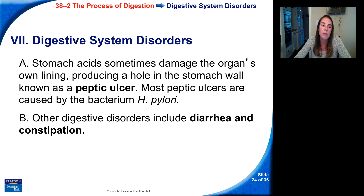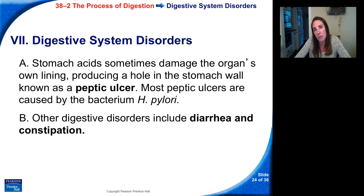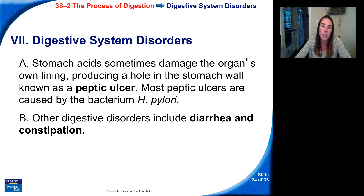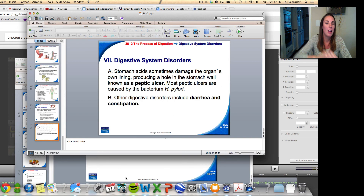Regarding digestive system disorders: stomach acids sometimes damage the organs' own lining, producing a hole in the stomach wall known as a peptic ulcer. Most peptic ulcers are caused by a bacterium, H. pylori. The acid can literally eat away at the stomach lining causing an ulcer. Other digestive disorders include diarrhea and constipation. And that is all for today — thanks for watching.